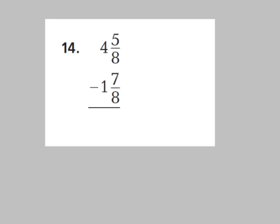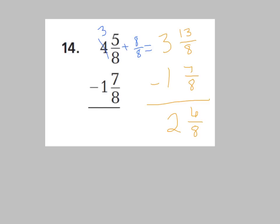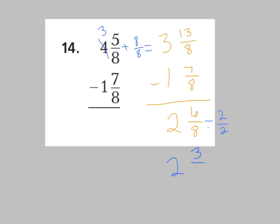Here's number 14: 4 and 5 eighths minus 1 and 7 eighths. Try this one on your own, press pause while working, and press play when ready. We had to rename 4 and 5 eighths: take away a whole from 4, giving 3 wholes, and give that whole to 5 eighths — so we have 3 and 13 eighths minus 1 and 7 eighths. 13 eighths minus 7 eighths is 6 eighths, and 3 wholes minus 1 whole is 2 wholes. That gives 2 and 6 eighths. Since both numerator and denominator are even, divide by 2 to simplify: the answer is 2 and 3 fourths.